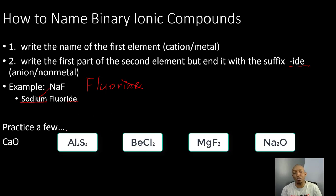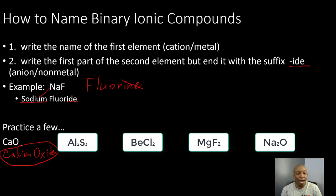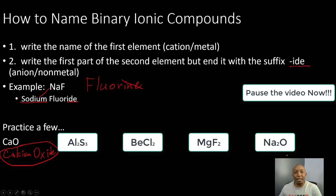Let's practice. I'll start with the first one as an example: Ca stands for calcium, so I write calcium as the first element. The second element is oxygen, but instead of writing oxygen, I write OX and add -IDE at the end. That gives us calcium oxide. Now take about a minute to write out the binary ionic compound names for the remaining chemical formulas. You can pause the video now.